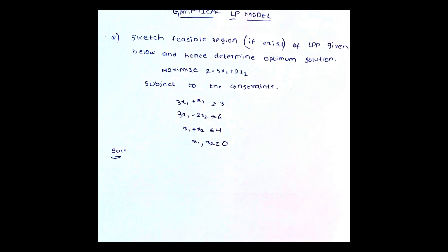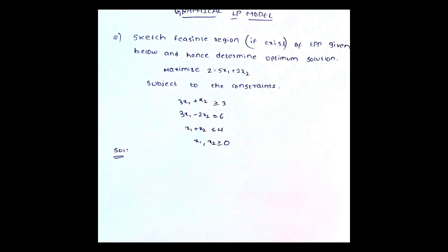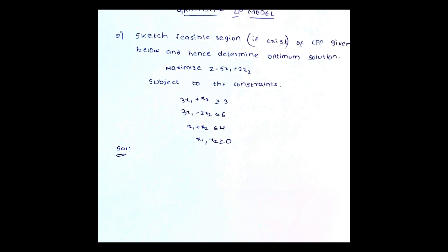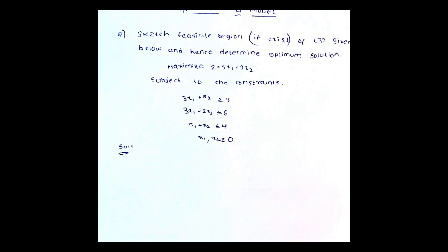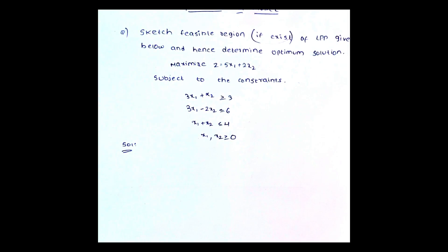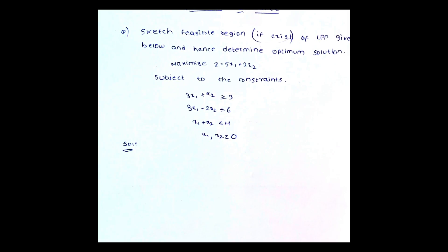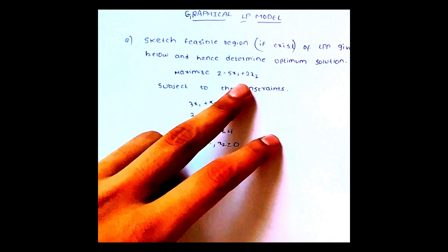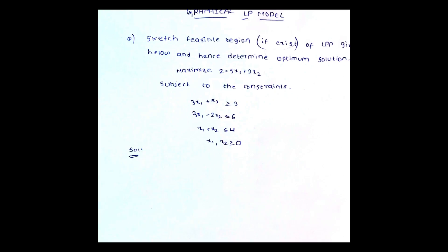For that, we have to find the points, and after that we have to plot on the graph. By seeing the graph, we have to find the feasible region, and after finding the feasible region, we take those points, substitute them in the objective equation, and whichever gives the maximum value — that is the optimum solution.